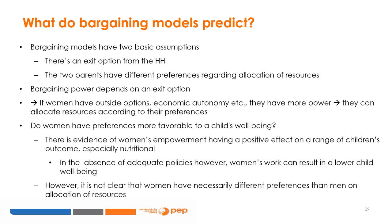Bargaining models are based on two main assumptions: that parents have different preferences about allocation of resources, and that there is an exit option, typically divorce. Bargaining power depends on the exit option. So, if women have exit options — autonomy, own income, etc. — it means they have more power, which in turn means they can allocate resources according to their preferences. There is some evidence that women's empowerment has a positive effect on a range of children's outcomes, such as nutrition or schooling. However, it is not clear that this stems from different preferences than those of men.